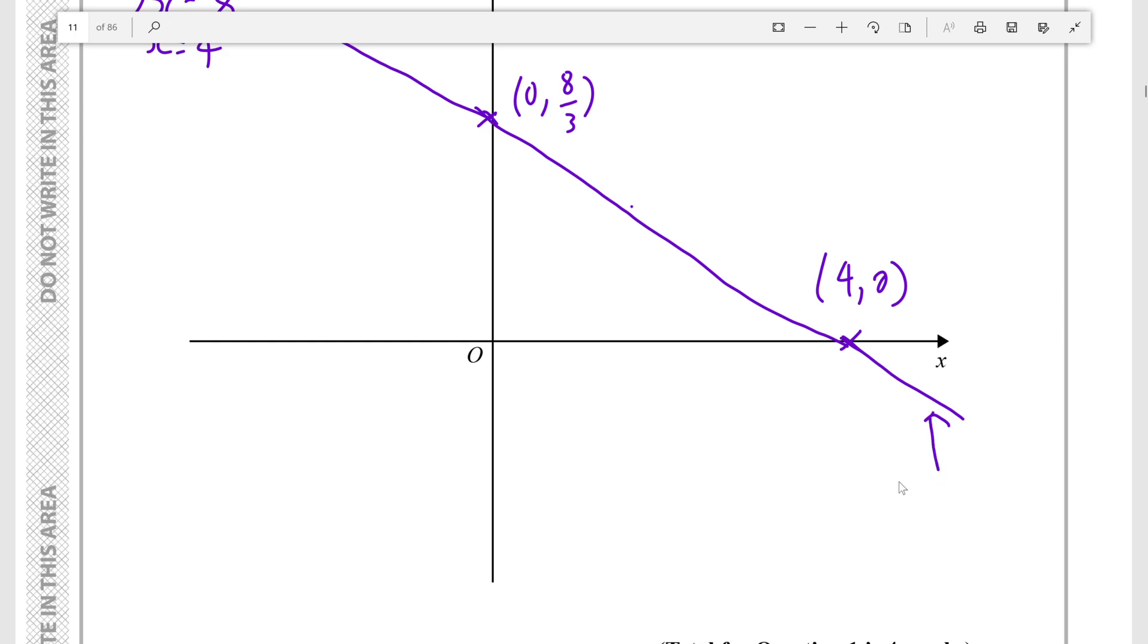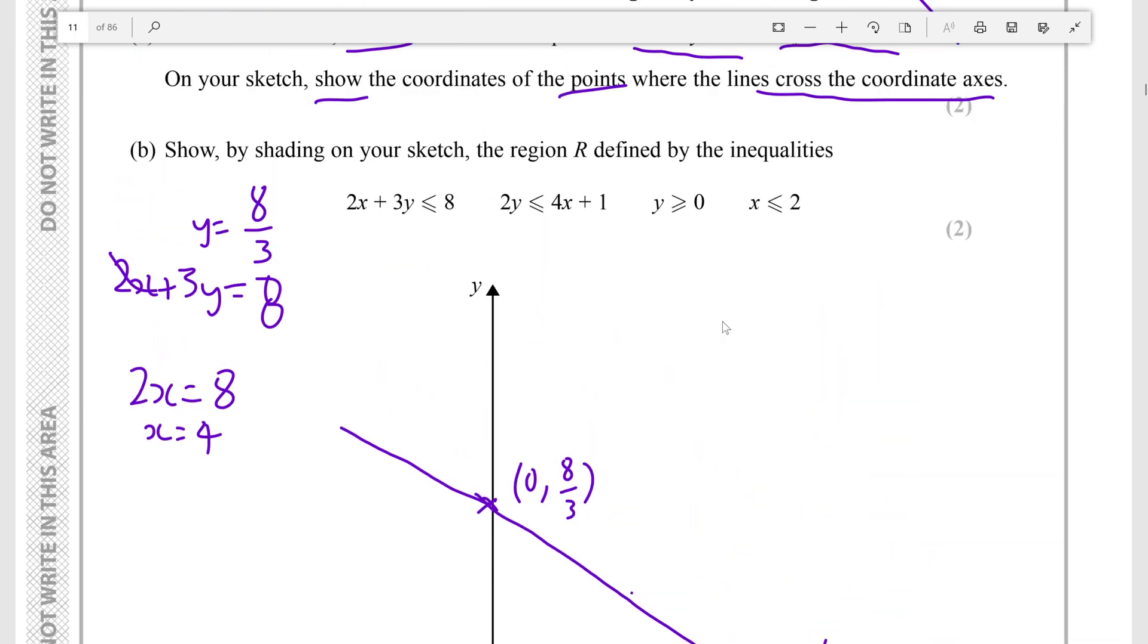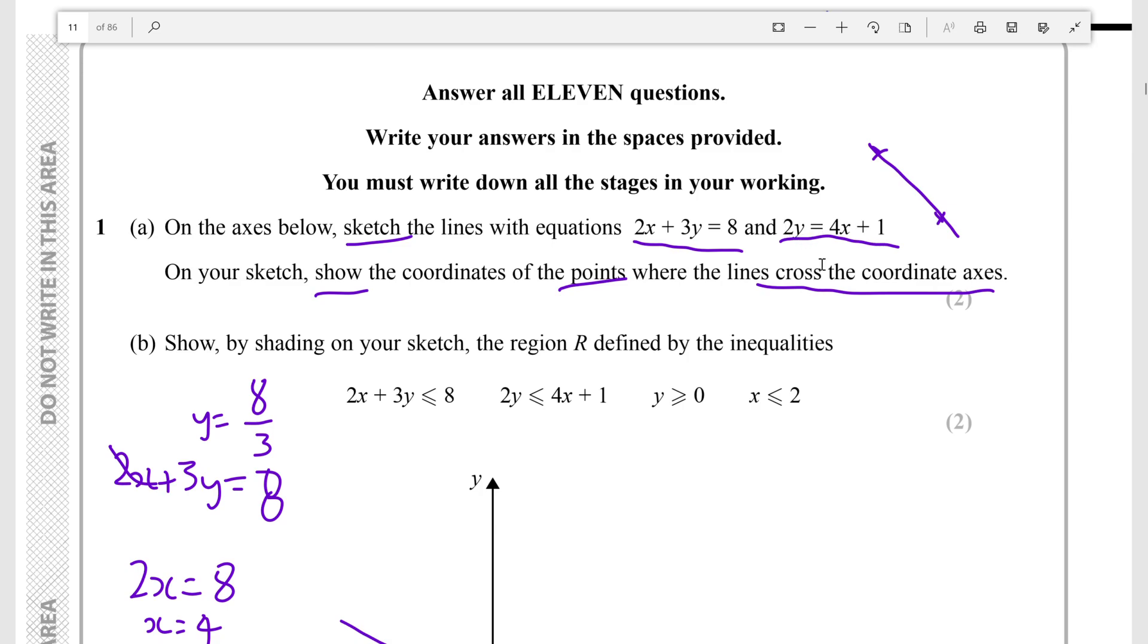And then to make it clear to the examiner, make it easier for the examiner to see which line is which, just say this is 2x plus 3y equals 8. And now we want to plot the other one, 2y equals 4x plus 1.